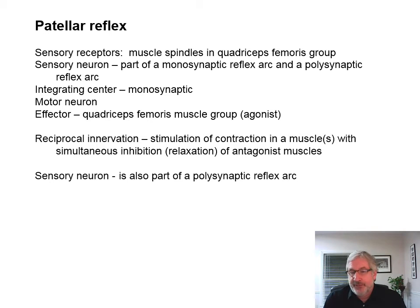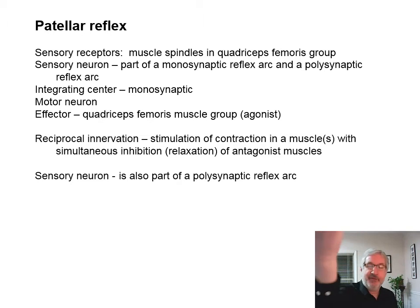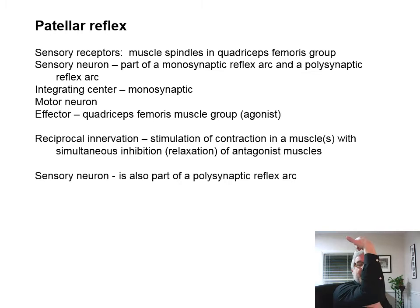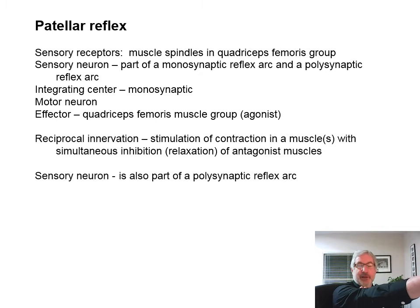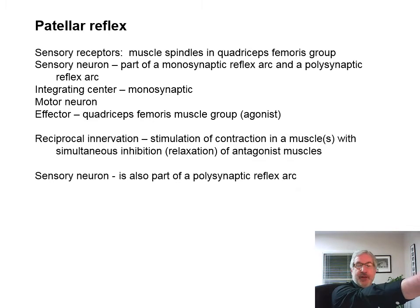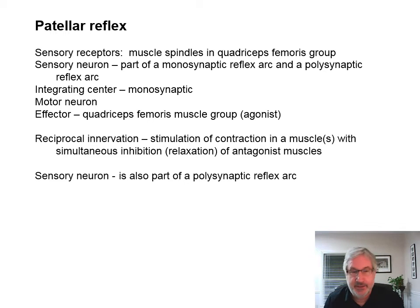The sensory neuron for reciprocal innervation is also part of the polysynaptic reflex arc. For instance, if I flex my arm, my biceps contract to do that, but my triceps had to relax. So you had innervation of the biceps and reciprocal innervation of the triceps — relaxation and contraction. If I extend my arm, I have to relax the biceps and contract the triceps. The triceps will be innervated and the biceps are reciprocally innervated. Then going back, the biceps are innervated and reciprocal innervation relaxes the triceps.